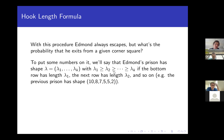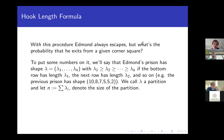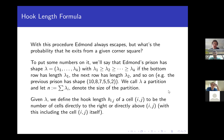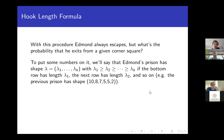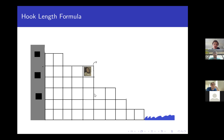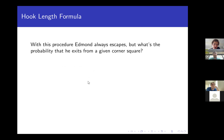Let's define some terms. Edmund's prison has shape λ, where λ is a tuple of integers satisfying a non-increasing property: the bottom row has λ_1 cells, the next row has λ_2, and so on. We call λ a partition and denote its size |λ| = n by the sum of entries. Given a partition λ, we define the hook length of cell (i,j) to be the number of cells directly to the right or directly above the cell, including the cell itself.